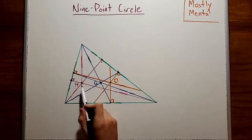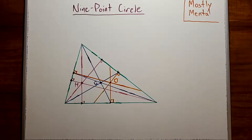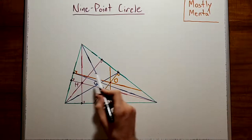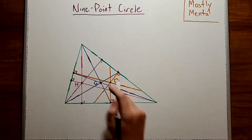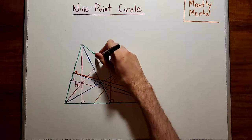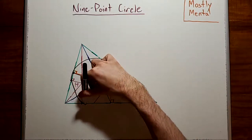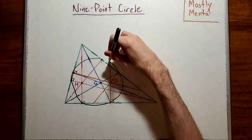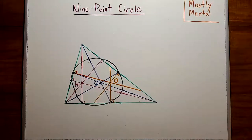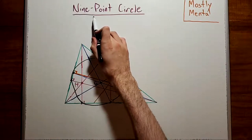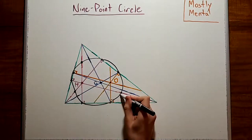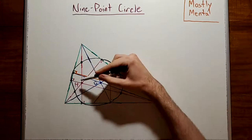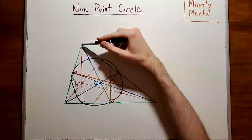In the process of defining these three centers, we used a few important points: the midpoints of each side, which we used to define the medians and the bisectors, and the feet of each of the altitudes. It turns out these six points all lie on a circle. And as you may have guessed from the title, that circle happens to use three more points of interest — the halfway points between the orthocenter and each of the vertices.